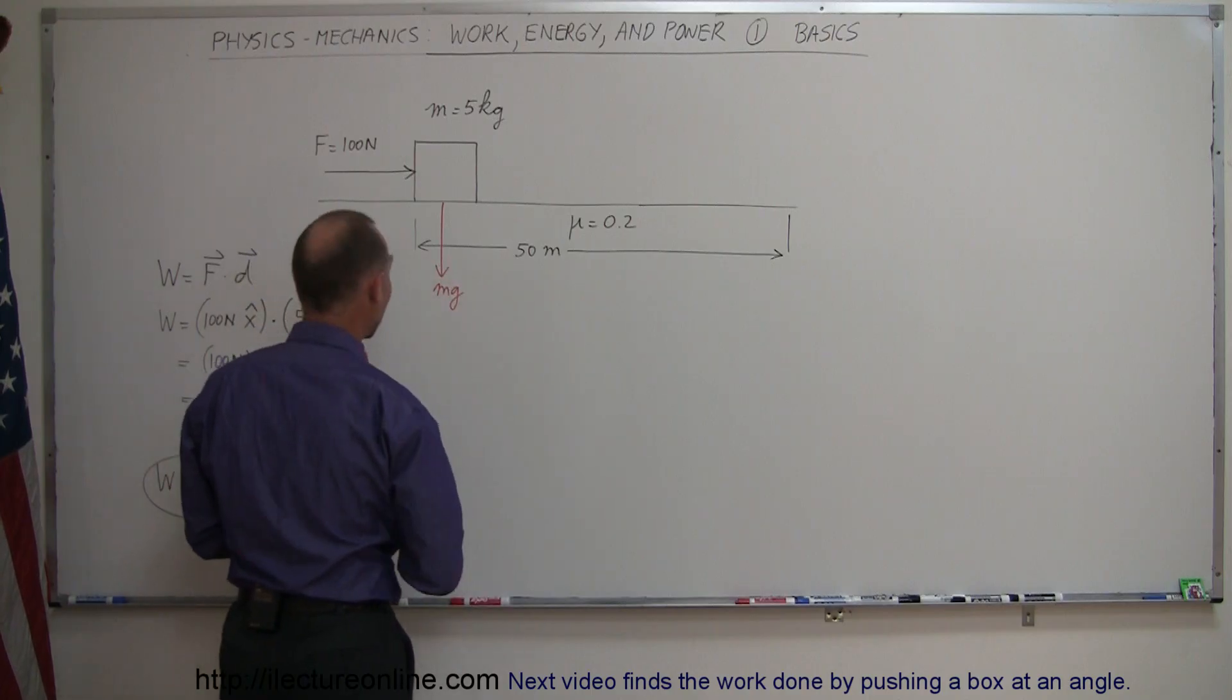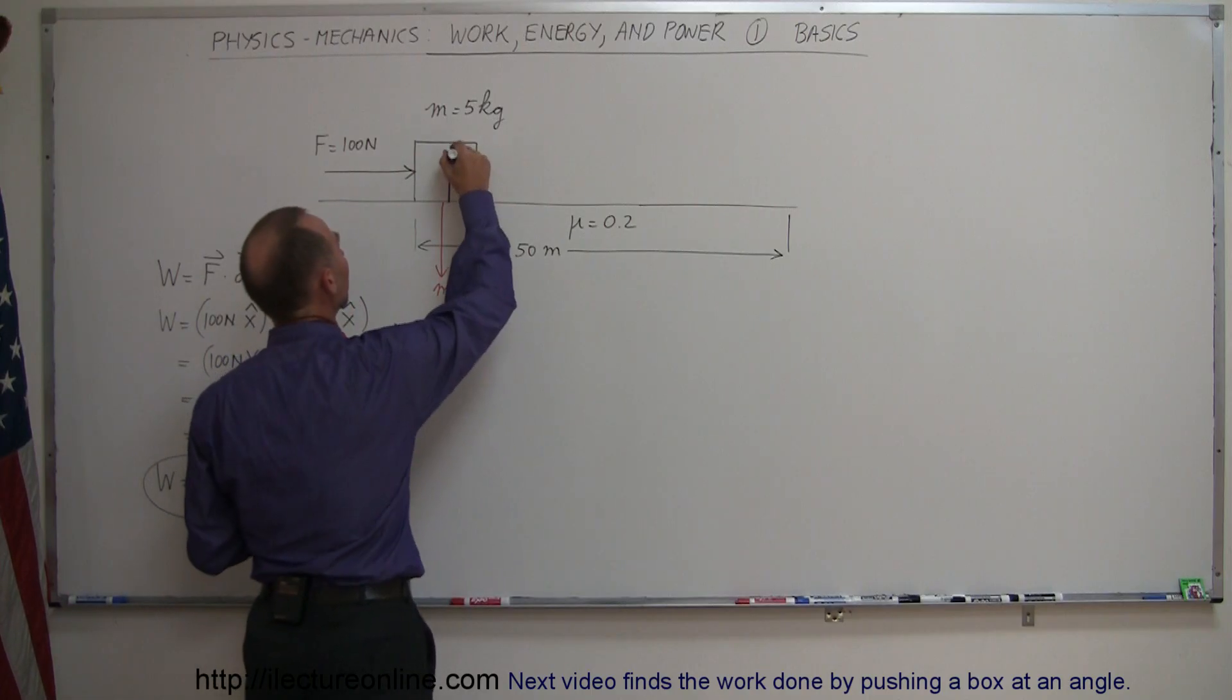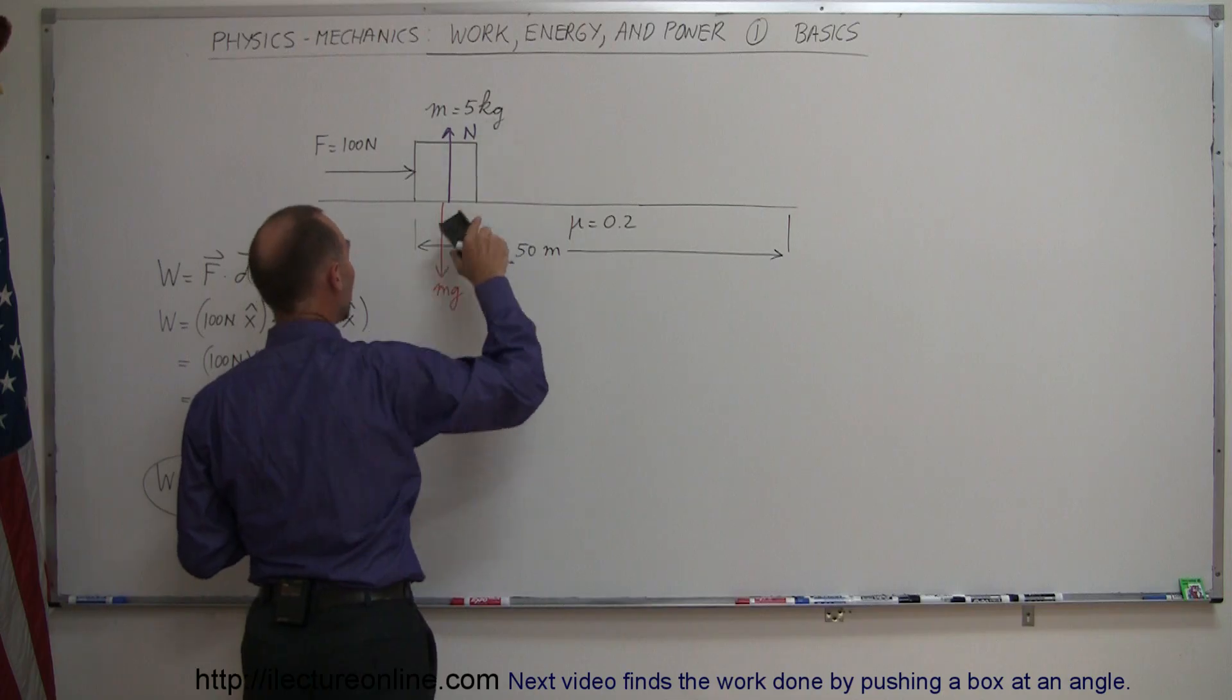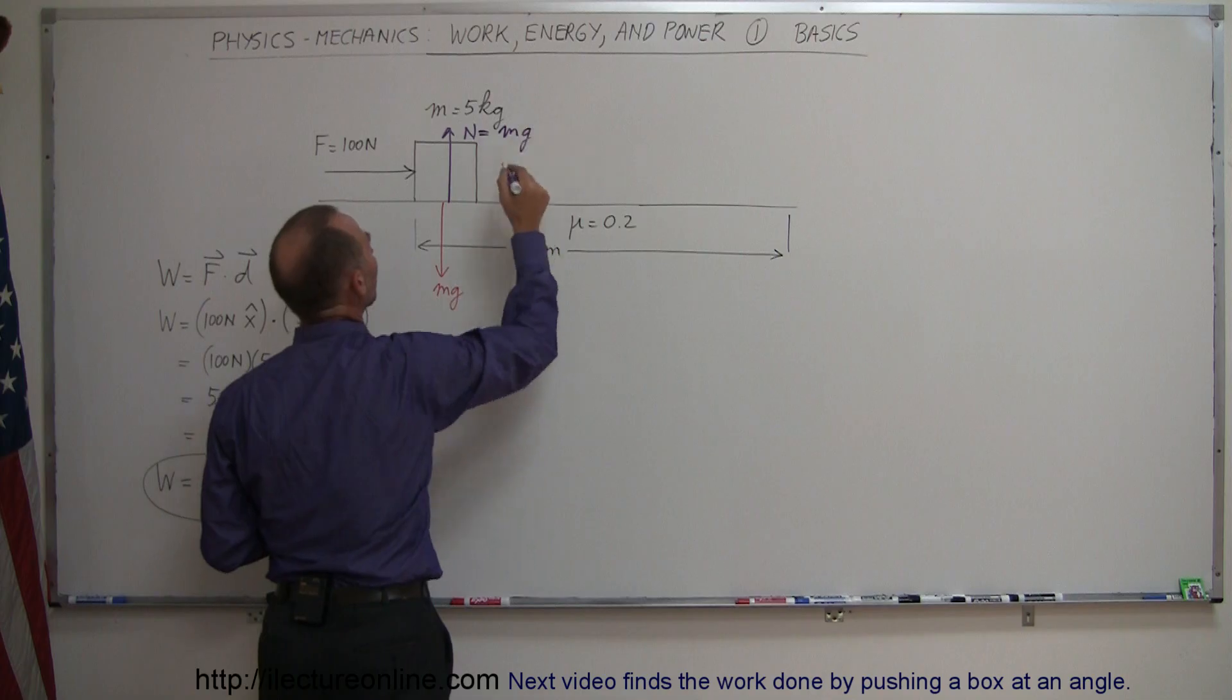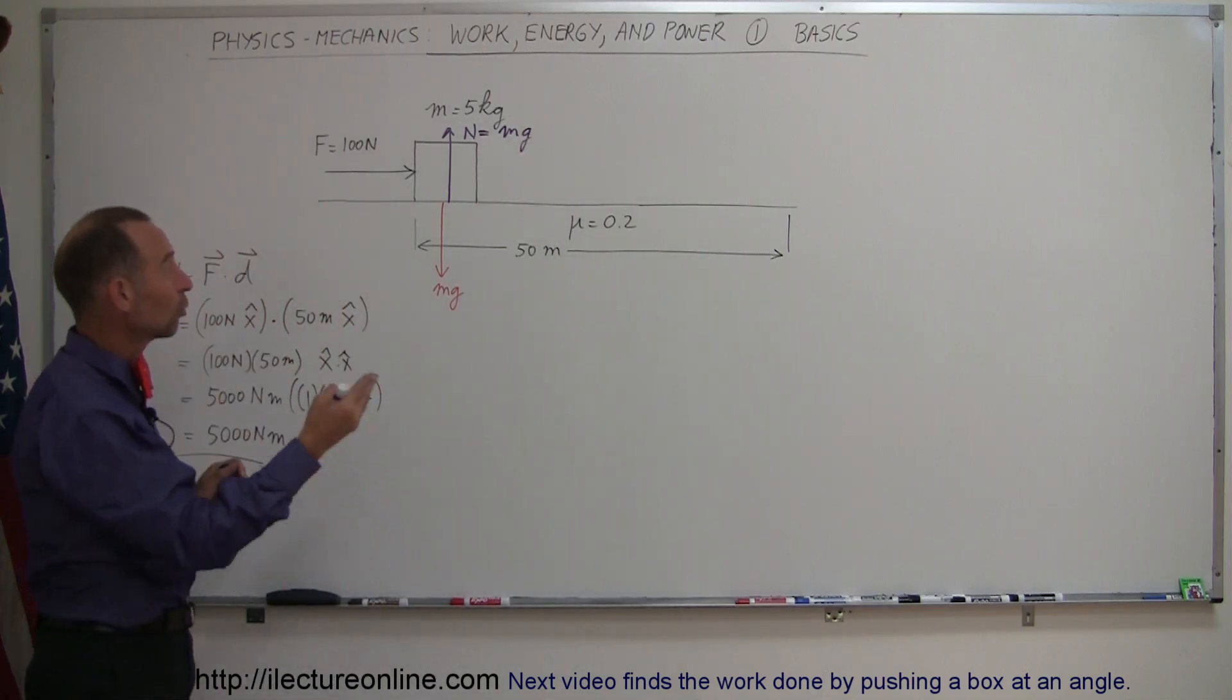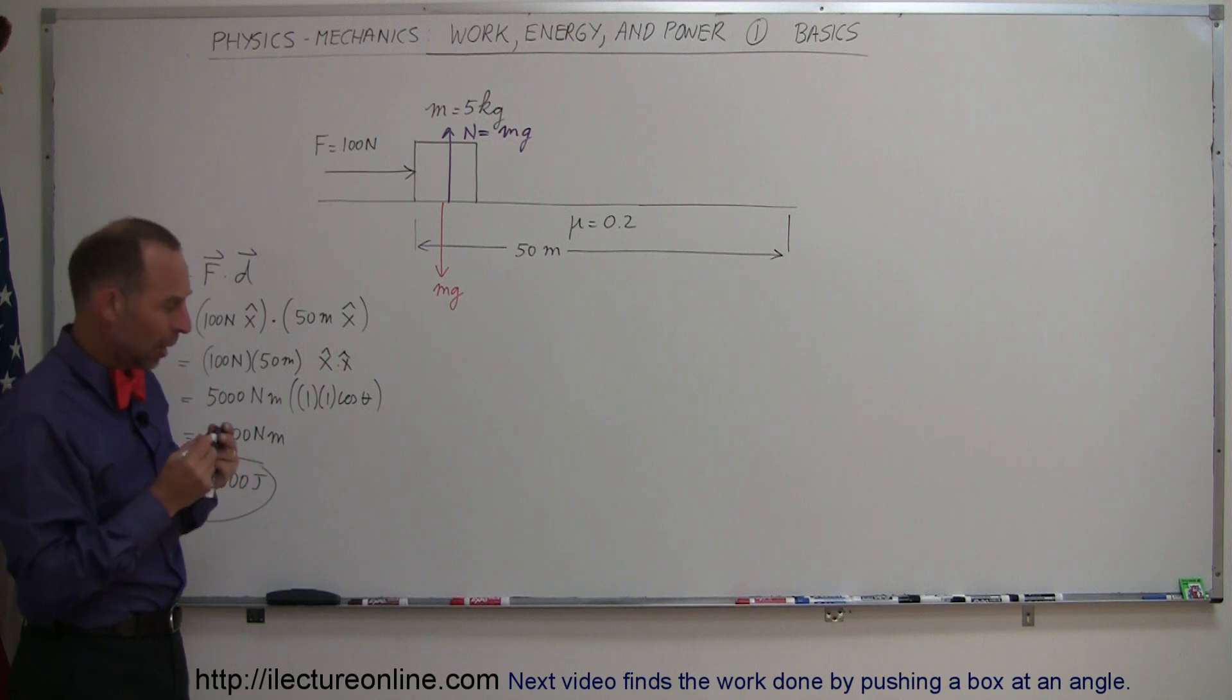If we do that, we can say we have the force of gravity pulling down on this block, which is mg, and then, of course, we have the reactionary force of the floor pushing back against the block, which is the normal force, and that will be equal in magnitude to this force right here, so equal in magnitude to mg.